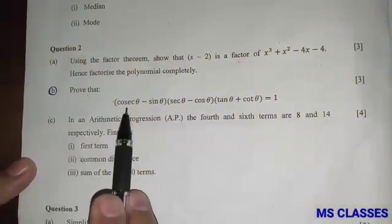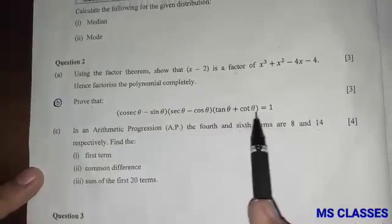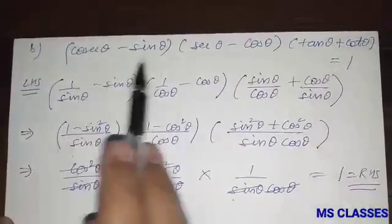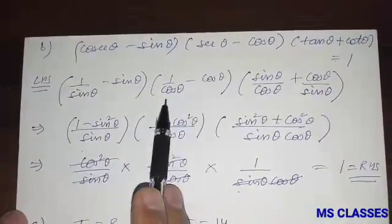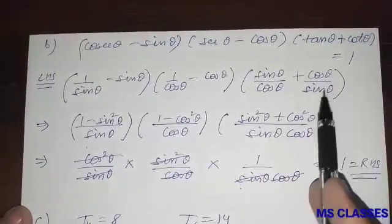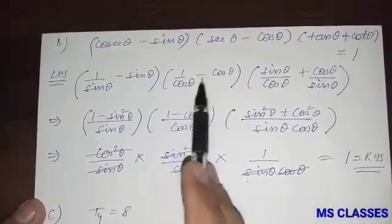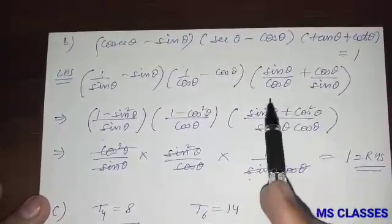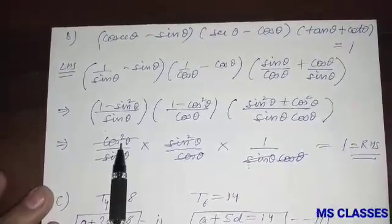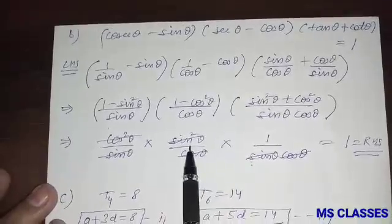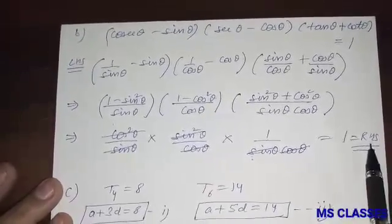Next question: prove that (cosec θ − sin θ)(sec θ − cos θ)(tan θ + cot θ) = 1. Taking the left-hand side, replace cosec θ with 1/sin θ, sec θ with 1/cos θ, tan θ with sin θ/cos θ, and cot θ with cos θ/sin θ. Taking the LCM gives (1 − sin²θ)/sin θ × (1 − cos²θ)/cos θ × (sin²θ + cos²θ)/(sin θ cos θ). Since 1 − sin²θ = cos²θ, 1 − cos²θ = sin²θ, and sin²θ + cos²θ = 1, after simplification the result equals 1, which is the right-hand side.